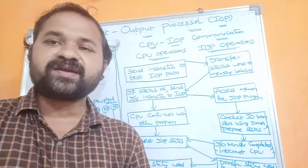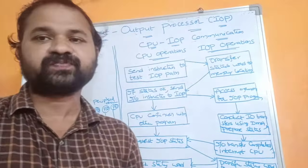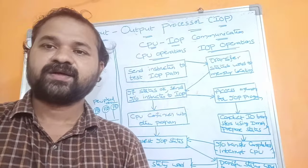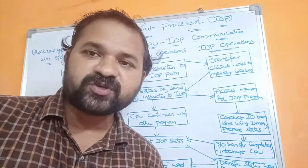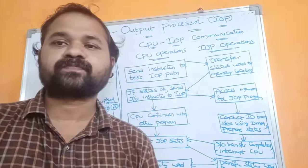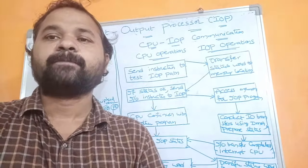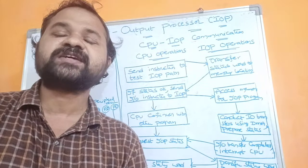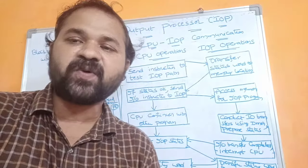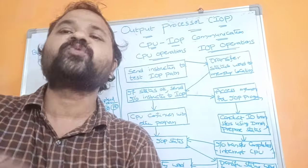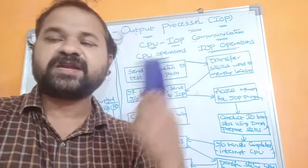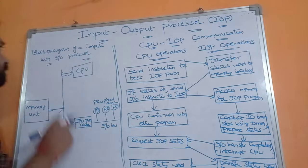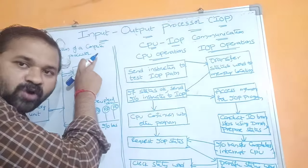So in order to reduce the burden on the CPU, the I/O processor was developed. The main task of the I/O processor is it performs I/O transfers between memory and I/O devices. So the I/O processor is mainly useful in order to perform input and output operations between memory and I/O devices.